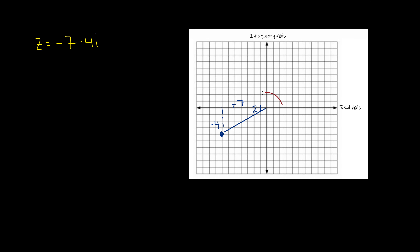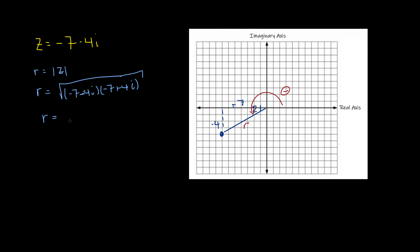I need to find theta — the angle — and my radius. I'll take the modulus: r equals the modulus of z, which is the square root of (−7 − 4i)(−7 + 4i). That gives us r equal to the square root of 65. I'll keep that exact for now.